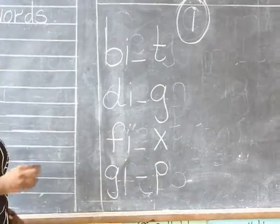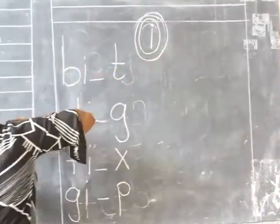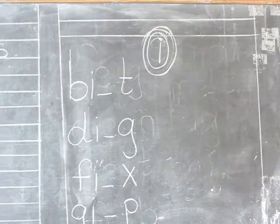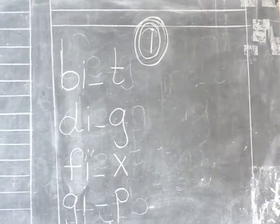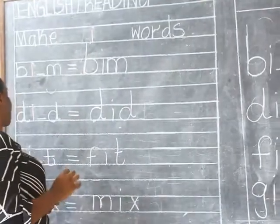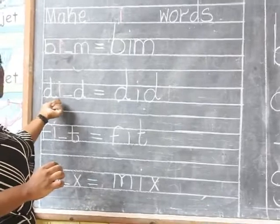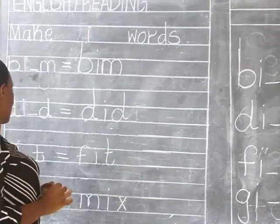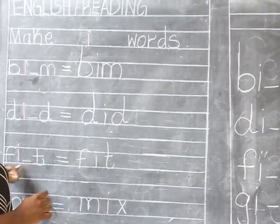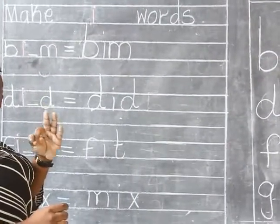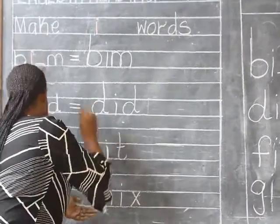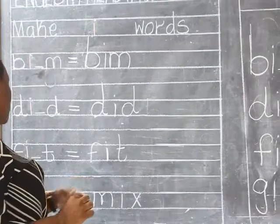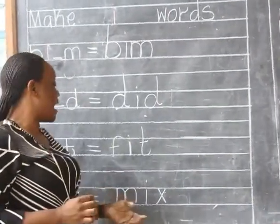I also have some more examples. When I have bu, i, m — bu, i, m — I'll get a three-letter word which you read as bin. Another example is du, i, du — du, i, du — I'll have another word which you read as did. Another word is f, i, tu — f, i, tu — I'll get a three-letter word which you read as fit. And our last word is m, i, tss — m, i, tss — and we are going to have a three-letter word which you read as mix.